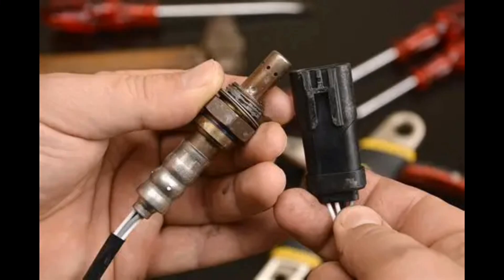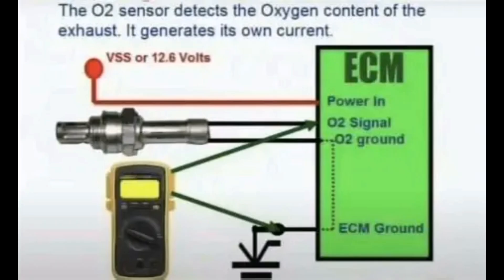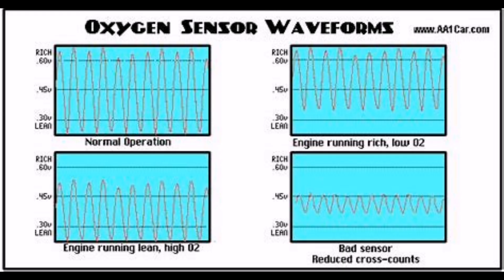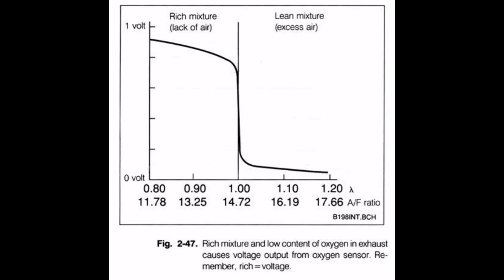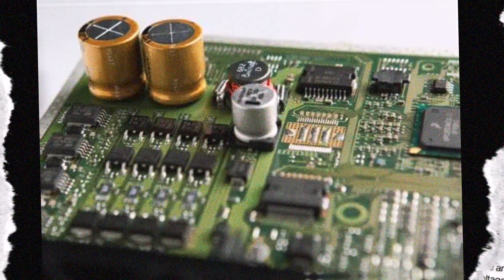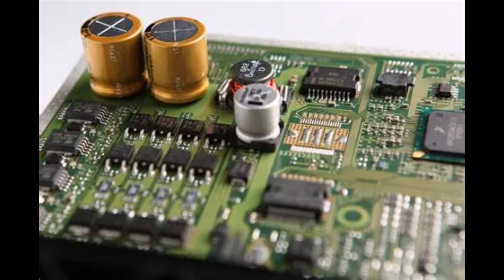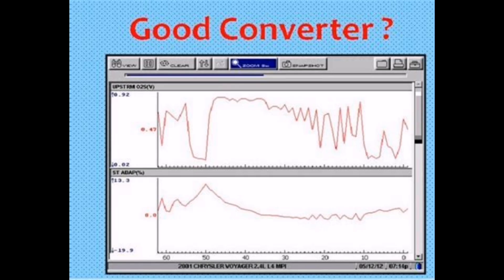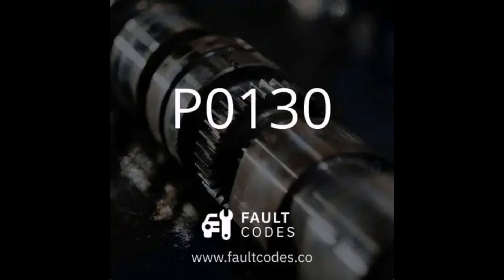The sensor helps the engine control module, or ECM, adjust the air-fuel mixture for maximum efficiency. Oxygen sensors generate a small voltage based on the amount of oxygen in the exhaust. When the air-fuel mixture is rich — more fuel — the sensor voltage is high. When it's lean — more air — the voltage is low.